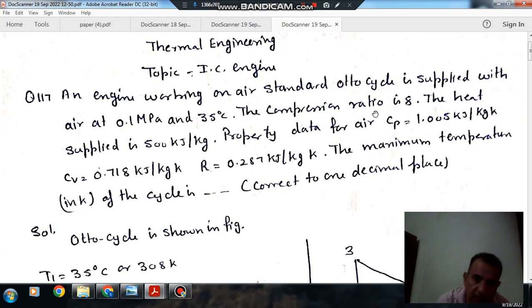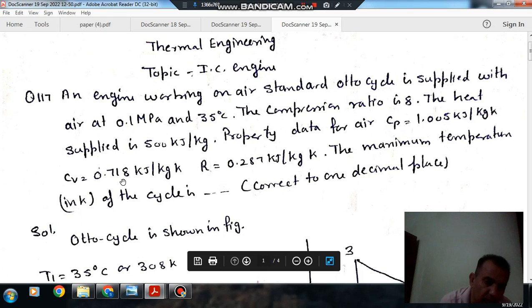The compression ratio is 8. The heat supplied is 500 kilojoule per kilogram. Property data for air: cp is equal to 1.05 kilojoule per kilogram per degree Celsius.